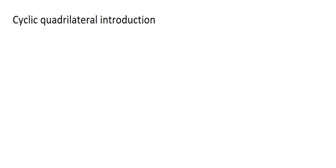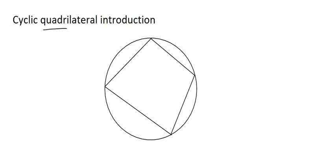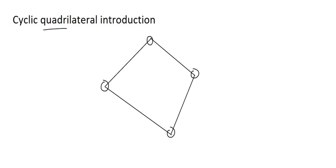A cyclic quadrilateral is a quadrilateral — it has four sides — and each of its four corners are able to fit on the edge of a circle. However, the circle does not have to be there for it to be considered a cyclic quadrilateral. This shape over here would be considered a cyclic quadrilateral. It's just a four-sided shape and each corner happens to fall on a circle, but if you took the circle away it would still be called a cyclic quadrilateral.